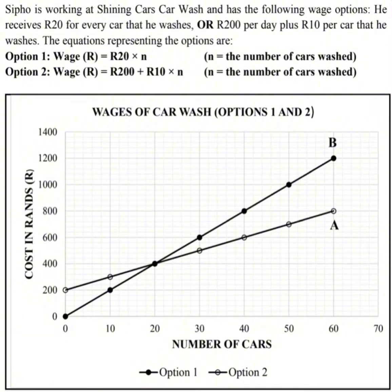In this case study, Sipo is working at Shining Cars car wash and has the following wage options. He receives 20 rand for every car that he washes, or 200 rand per day plus 10 rand per car that he washes.